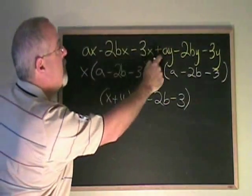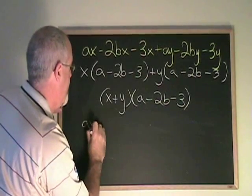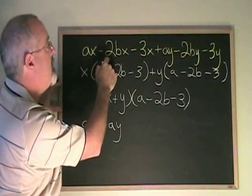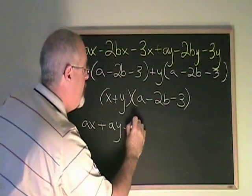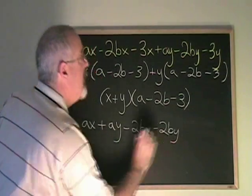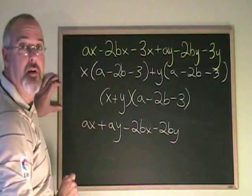I'm going to write my ax plus ay together. I'll write my minus 2bx and my minus 2by together. And I'll write my minus 3x and minus 3y together.